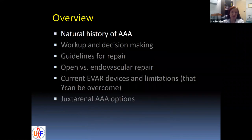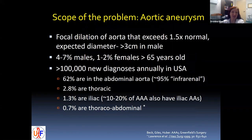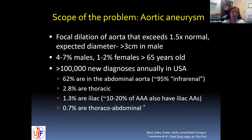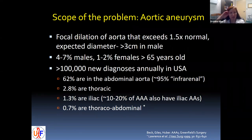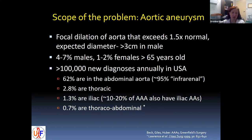Starting with the natural history of aneurysms: aneurysms are focal dilation of the aorta that exceeds one and a half times the normal expected diameter, which translates to about three centimeters in a male patient — three to three and a half or so would be considered aneurysmal. This translates to 4.7% of all males and 1.2% of all females greater than 65 years old. Approximately just over 100,000 patients are diagnosed annually in the U.S. Most are in the abdominal aorta, with about 95% classified as infrarenal, about 3% thoracic, a little less than 2% iliac, and less than 1% are true thoracoabdominal aneurysms.